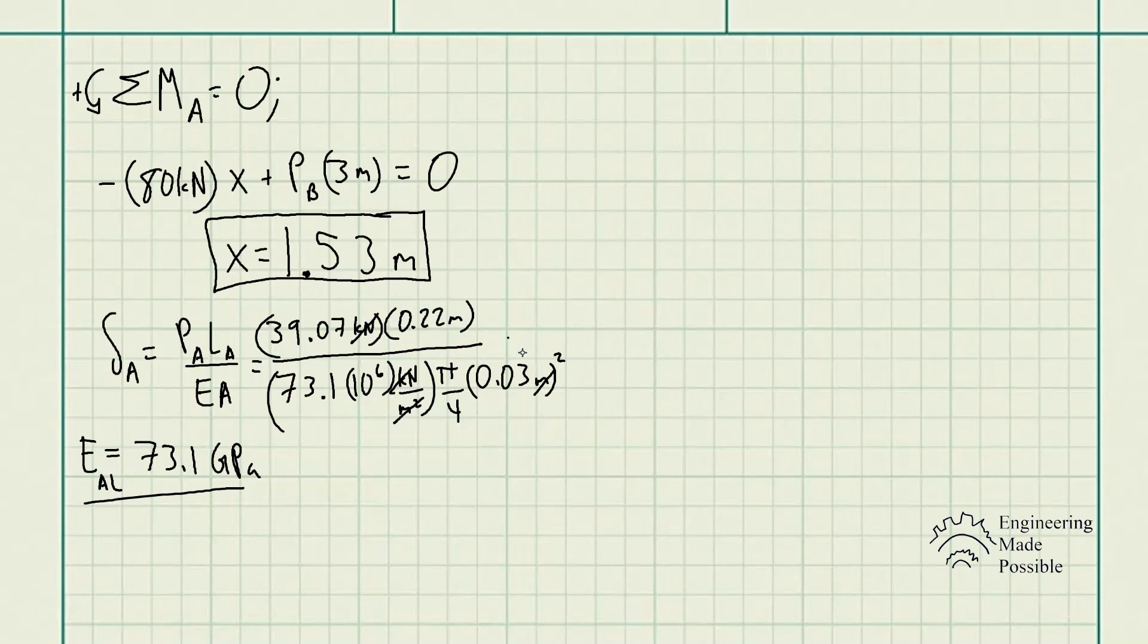We have the deformation in meters. We could convert it back to millimeters or convert everything to millimeters, depending on your preference. In my case, I prefer to do the conversion after the calculations. So deformation is 0.166 millimeters. That's how much cylinder A deforms.